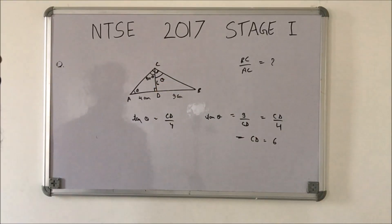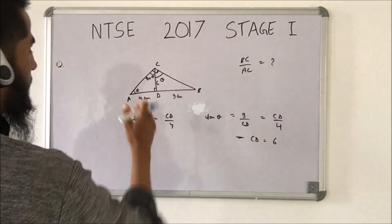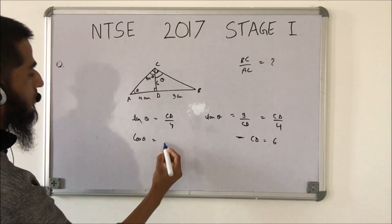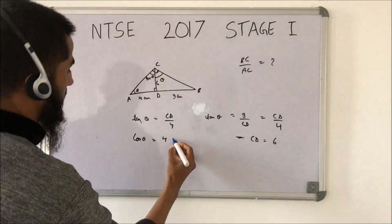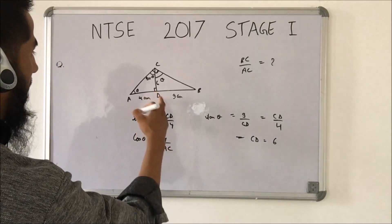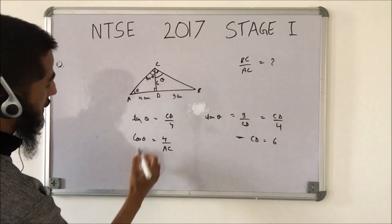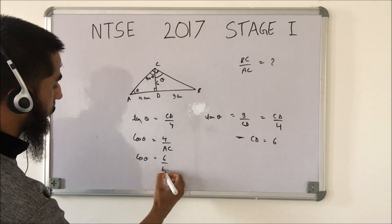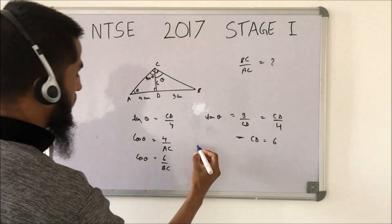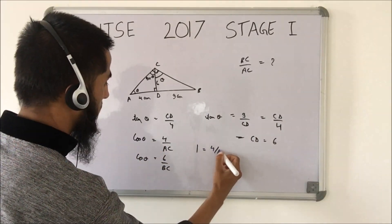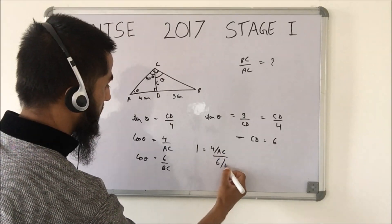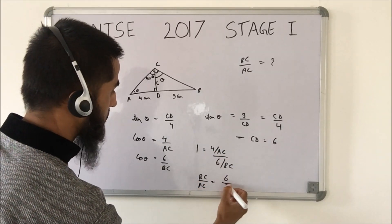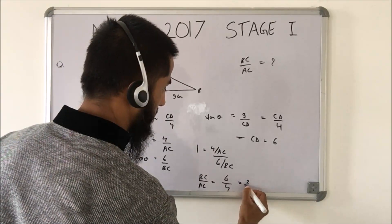Now that CD = 6, we find the ratio. Taking cos θ in triangle ACD gives cos θ = 4/AC, and cos θ = 6/BC in triangle BCD. Dividing: cos θ/cos θ = (4/AC)/(6/BC), so BC/AC = 6/4 = 3/2.